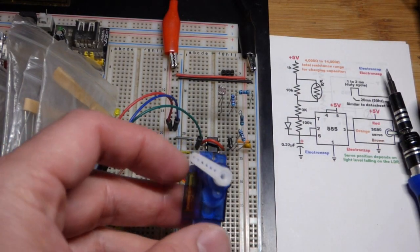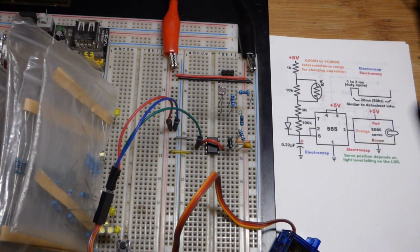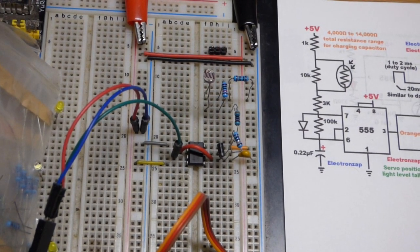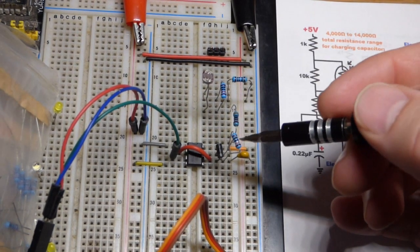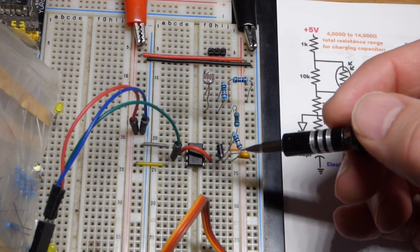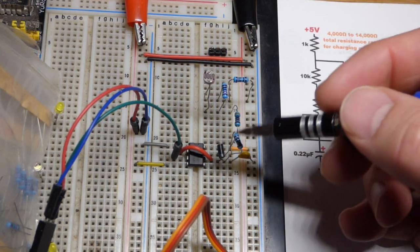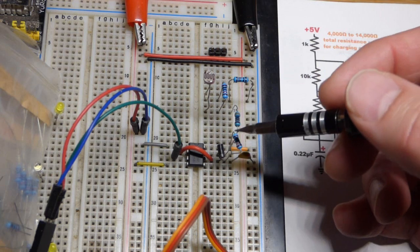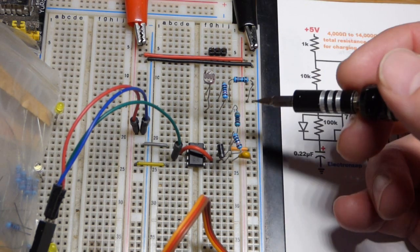So we'll zoom in and look at it. The servo position—we're using the SG90—depends on pulses. So we've got a 0.22 microfarad capacitor there and a 100,000 ohm resistor setting the low time to about 20 milliseconds approximately. We know that because it's working. So when it's low and it comes to high...